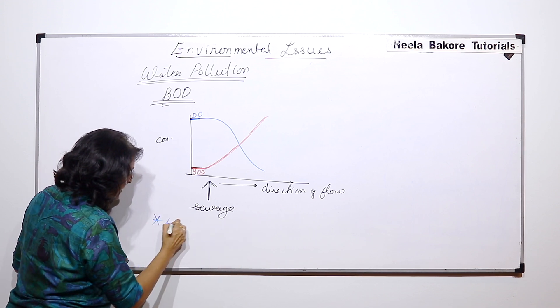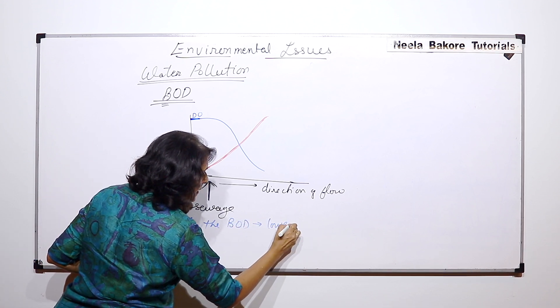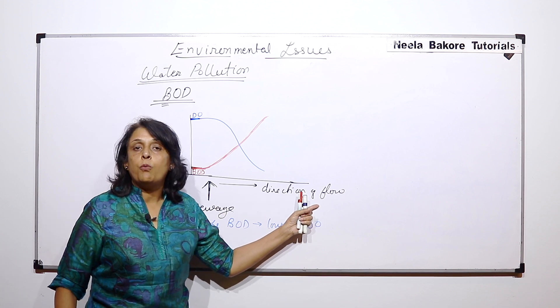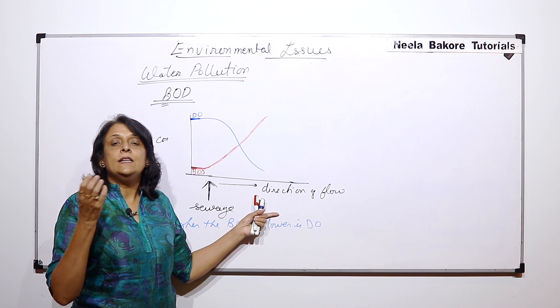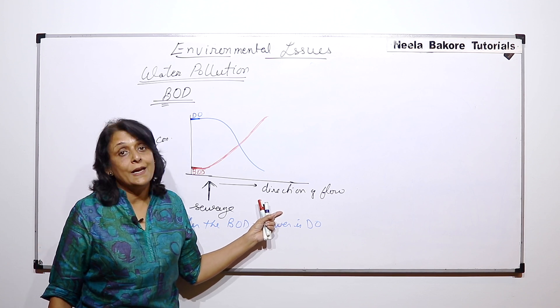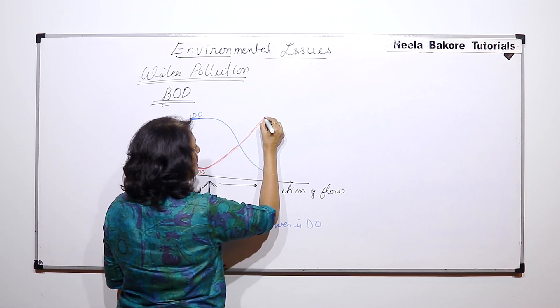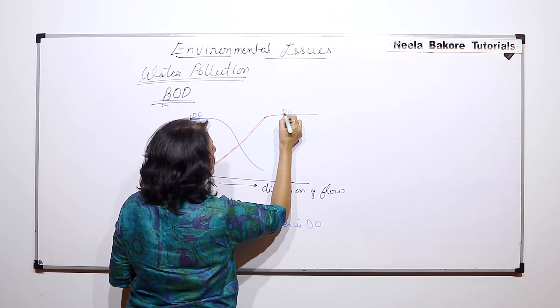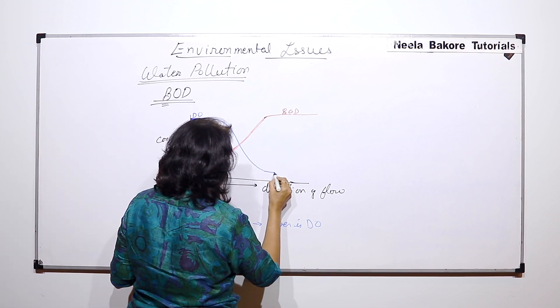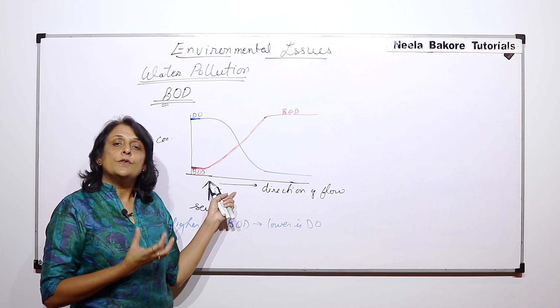As the direction of flow of water is indicated here, over a period of time these microbes are going to decompose the organic matter. After a certain distance, most of the organic matter will get decomposed. For some time, BOD is going to remain very high and dissolved oxygen is going to remain very low.